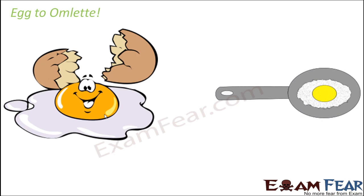Another example: egg to omelet. When you fry an egg on the pan it becomes an omelet. When we fry it, we expose it to very high temperature. A lot of change takes place in its chemical composition during frying. Since the chemical composition gets changed, you cannot get back the egg from the omelet — that is why this is an example of irreversible change.